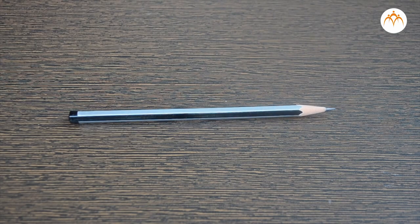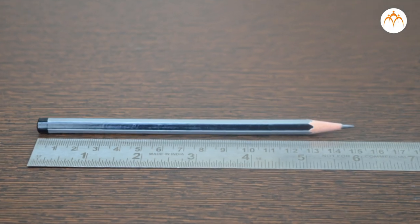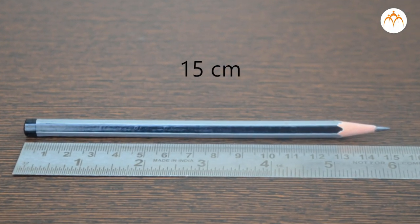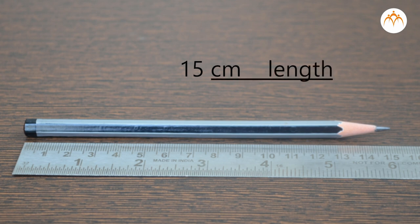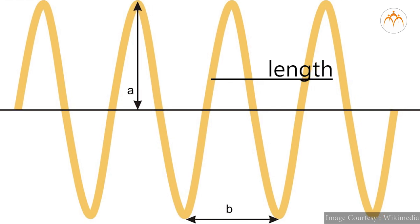Length is a measure of distance. This pencil is 15 cm long. Dimension of this pencil can be described by length. Waves are described by wavelength.